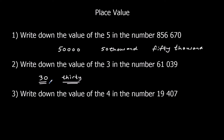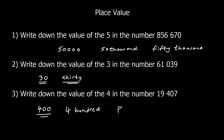Question 3: write down the value of the 4 in the number 19,407. The 4 is in the hundreds column, so it's worth 400. We can write 400 in digits or four hundred in words.